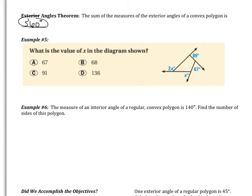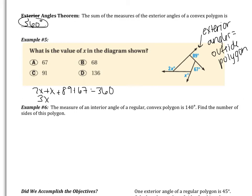Looking at example five, it says what is the value of x in the diagram? All those angles shown are exterior angles. They are the angles outside of the polygon. And we talked about exterior angles before when we were talking about triangles. So all of those are going to sum to be 360 degrees. So I'm going to get 2x, add x, add 89, add 67, equals 360. Simplifying, I have 3x, add 156, equals 360. If I subtract 156, I get 3x equals 204, and x equals 68. So B should be our correct answer. So exterior angles tend to be a lot easier than interior angles because the sum is 360 no matter what. Let's move on. We have a few more examples.